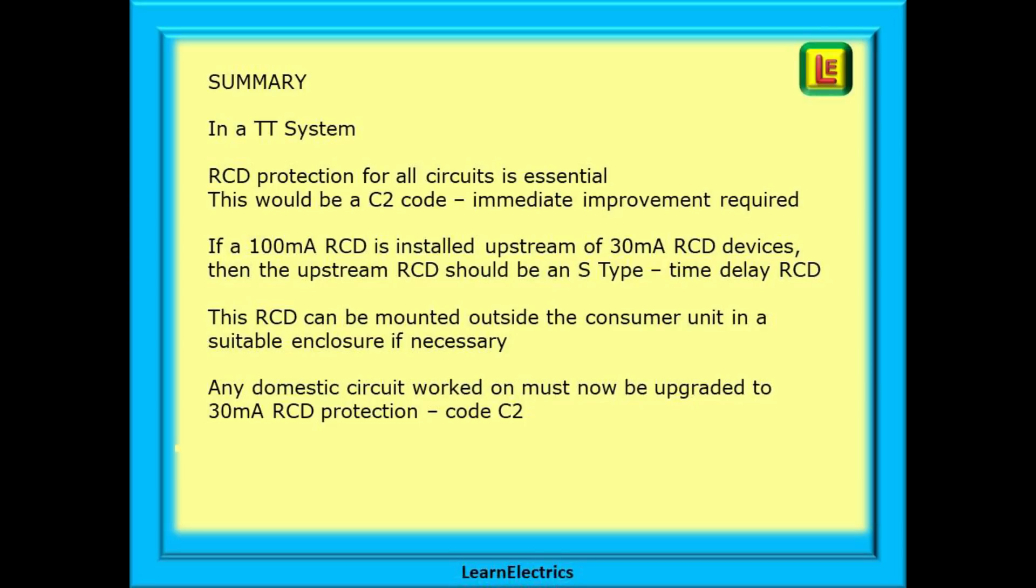A brief summary then. In a TT system, RCD protection for all circuits is essential. This would be a C2 code, immediate improvement required. If a 100 milliamp RCD is installed upstream of a 30 milliamp RCD device, then the upstream RCD should be an S type time delayed RCD. This RCD can be mounted outside the consumer unit in a suitable enclosure if necessary. Any domestic circuit that is worked on must now be upgraded to 30 milliamp RCD protection, code C2.